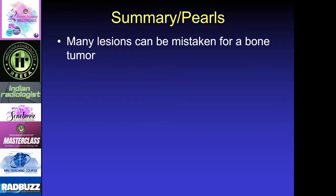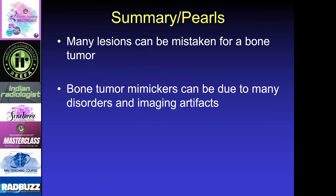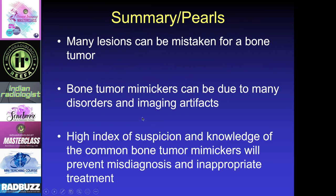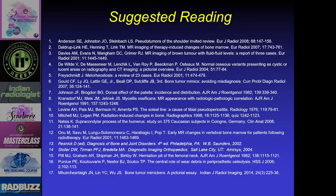In summary, there are many lesions in bone that can be mistaken for a bone tumor, and in fact many lesions we see in bone are actually not true tumors. Bone tumor mimickers can be due to a variety of disorders including imaging artifacts. You need to have a high index of suspicion and knowledge of these common bone tumor mimickers in order to prevent misdiagnosis and provide the appropriate treatment.